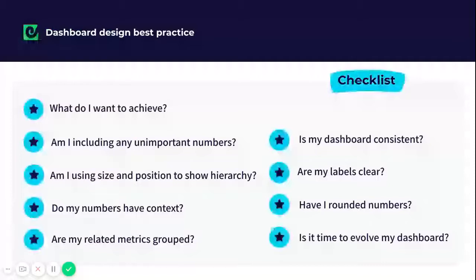Am I including any unimportant numbers? Am I using size and position to show hierarchy? Do my numbers have context and do they make sense with or without that context? Are my related metrics grouped? Is my dashboard consistent? Are my labels clear and easy to understand? Have I rounded my numbers? And finally, is it time to evolve my dashboard?